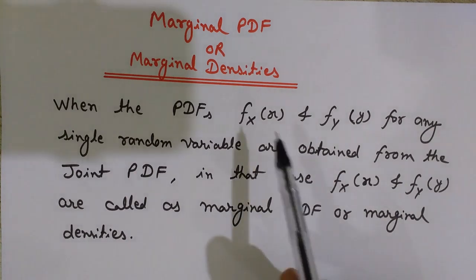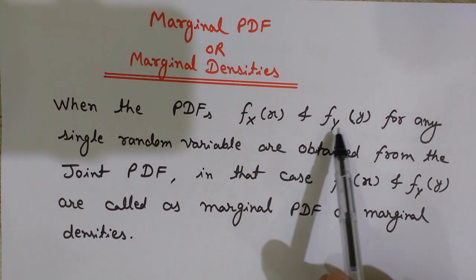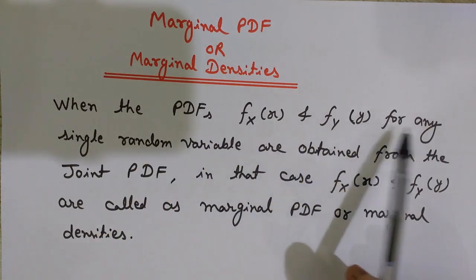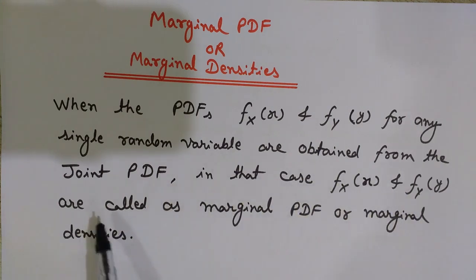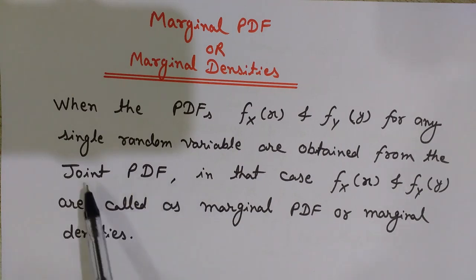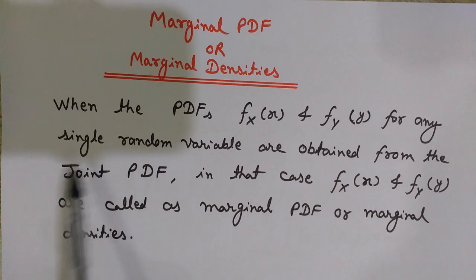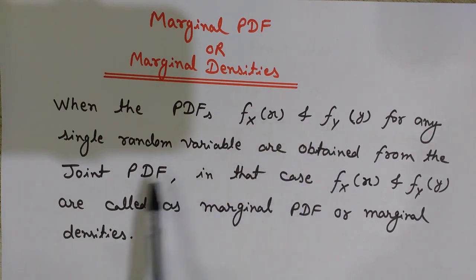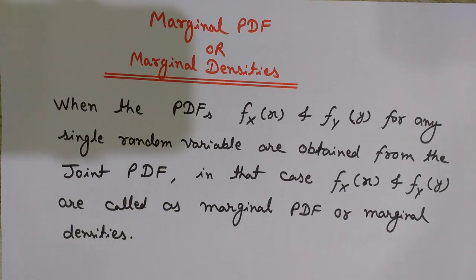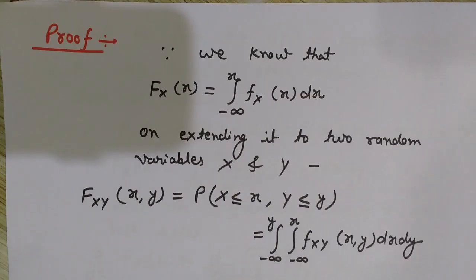The probability density functions for random variables x and y are denoted by f(x) and f(y). When the probability density functions for any single random variable are obtained from the joint probability density function, then f(x) and f(y) are called marginal PDF or marginal densities. So whenever we get the PDF of a random variable x or y from the joint PDF f(x,y), we call these probability density functions marginal PDFs or marginal densities.